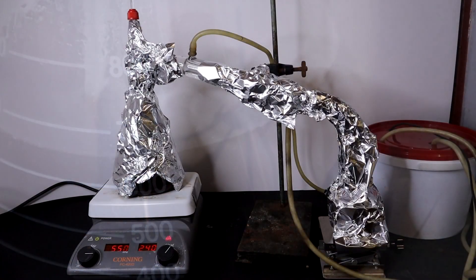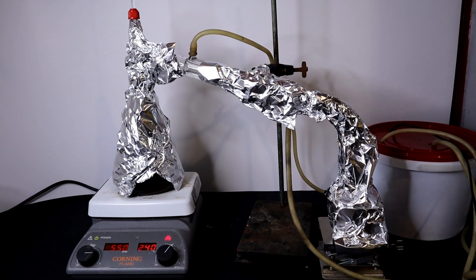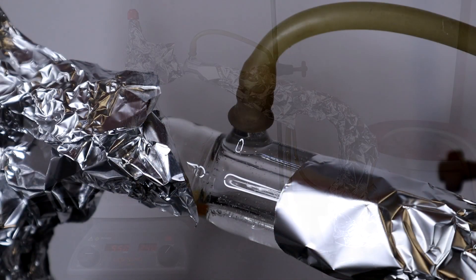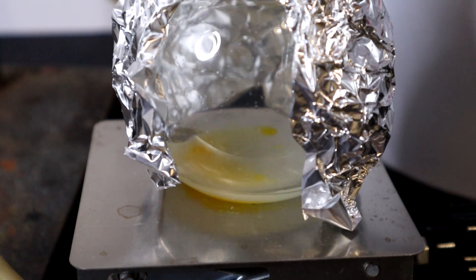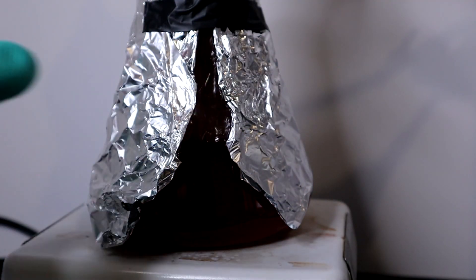After which it was set up for distillation. As aniline is light sensitive I've wrapped the flask, condenser and collecting flask with aluminum foil. Slowly a milky white liquid and a yellow liquid started collecting in the flask. Distillation was continued until the distillate became clear.